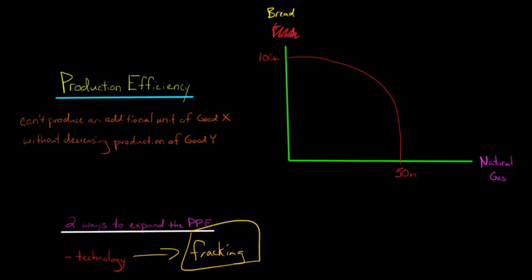That's bread. And then here, instead of natural gas, let's say that we have ovens. And I know these numbers are going to be a little weird, but let's say that we had a situation where we said, okay, we have 100 million units of bread as the max we could produce, or 50 million ovens.